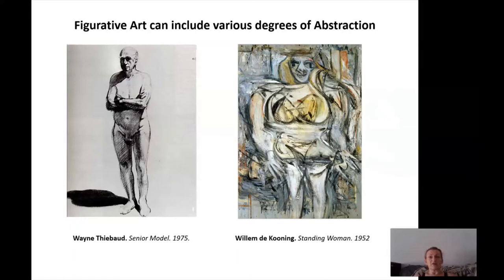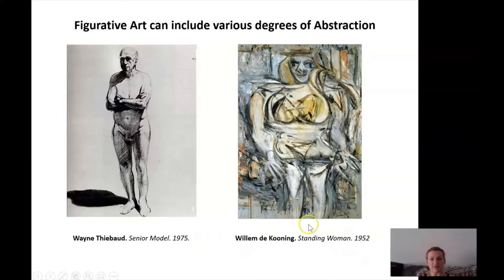Coming back to various degrees of abstraction — as you can see, you can draw from life and it looks like a real human figure, or it can look more abstract. William de Kooning, if you look at work from 1975, that kind of approach was still considered more valid. And Wayne Thiébaud — I always have trouble pronouncing his name, but I really like this artist — he was one of the very few who still practiced drawing a figure without abstracting it too much.